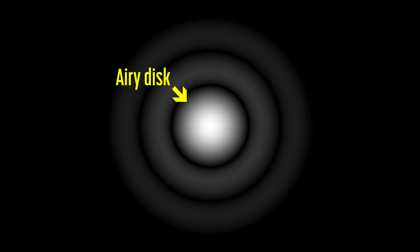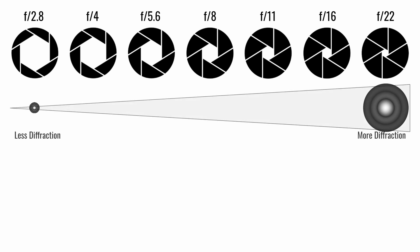A single point of focused light striking a sensor appears as a central dot called an airy disk, surrounded by a pattern of concentric rings called the airy pattern. If the airy disk — that central dot — is smaller than the pixel on the sensor, the diffraction is not visible. However, if the airy disk is larger than the pixel, that point of light is picked up by surrounding pixels, resulting in visible diffraction. Diffraction appears at the higher f-stop values on your lens since these narrower apertures increase the size of the airy disk.